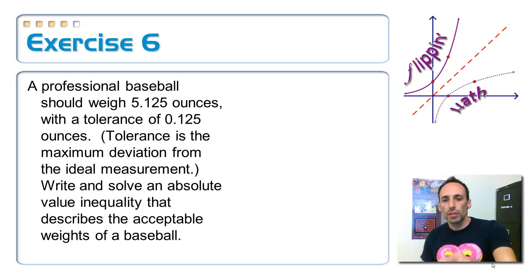All right, so tolerance, it says right there in the parentheses, is a maximum deviation from the ideal measurement. Okay, so we're going to write and solve an absolute value inequality that describes the acceptable weights of a baseball.